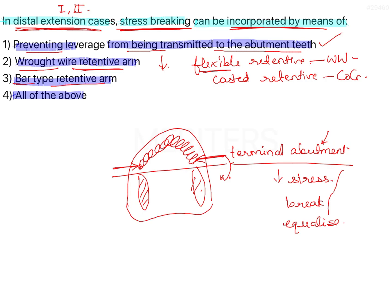Bar type retentive arm means you use an I-bar. So if this is your tooth for example, you use an I-bar, a guide plane, and a mesial rest. You use an RPI system.